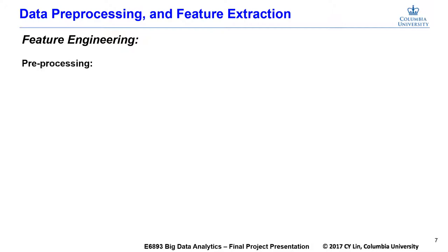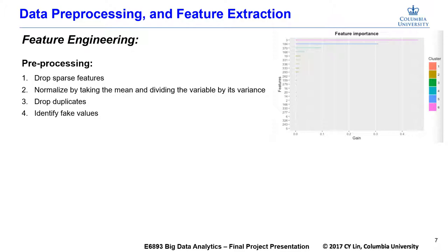For data preprocessing, we drop sparse and duplicate features, normalize the data, and identify missing values. Since the features are anonymized, we use XGBoost algorithm to analyze the feature importance.